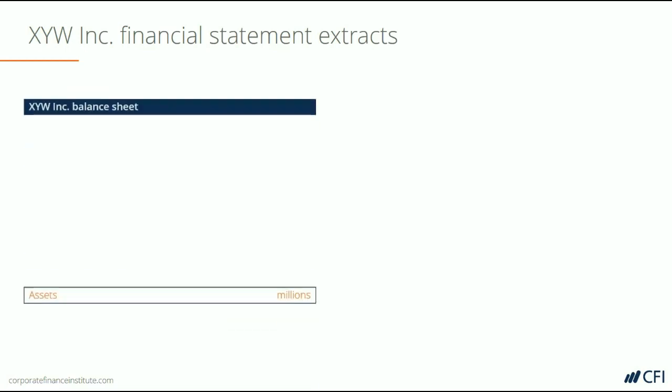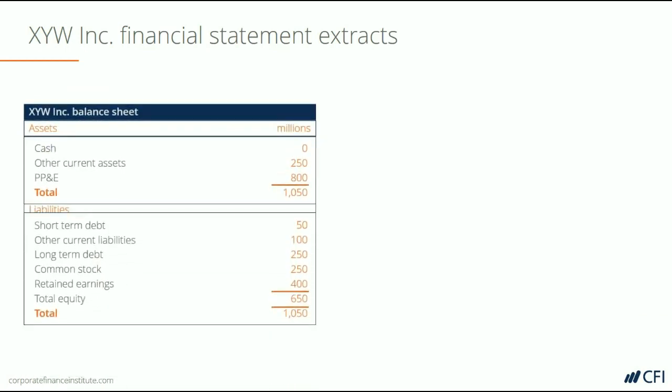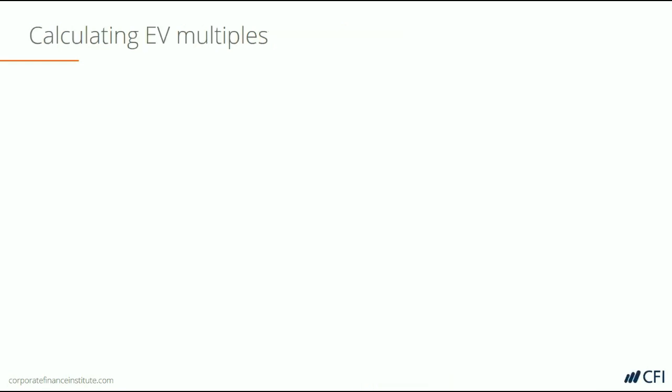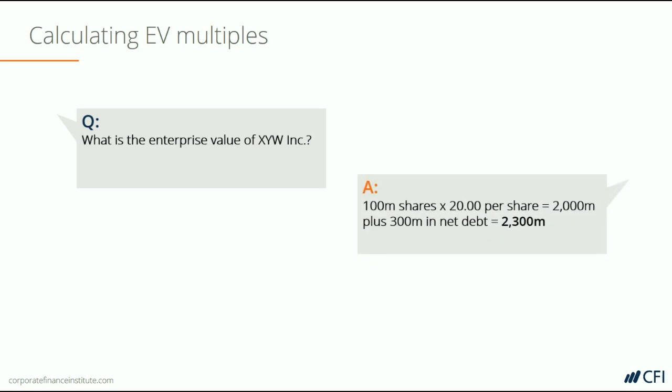Let's take a look at a company that has the following balance sheet and income statement. Based on the numbers in the previous page, what is the enterprise value of XYZ Inc? The company has 100 million shares outstanding and a share price of $20, so that equates to an equity value of $2 billion. Plus $300 million in net debt, that equates to an enterprise value of $2.3 billion.